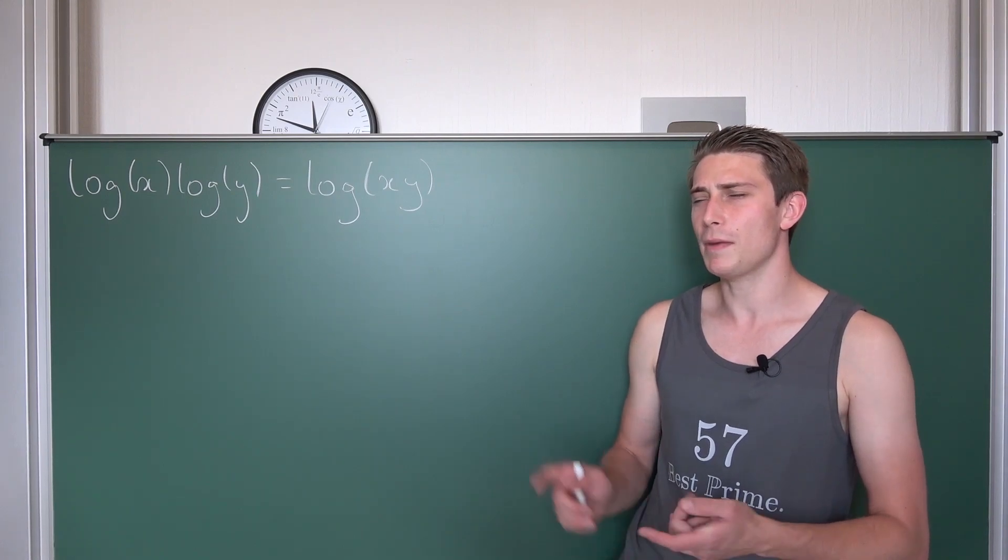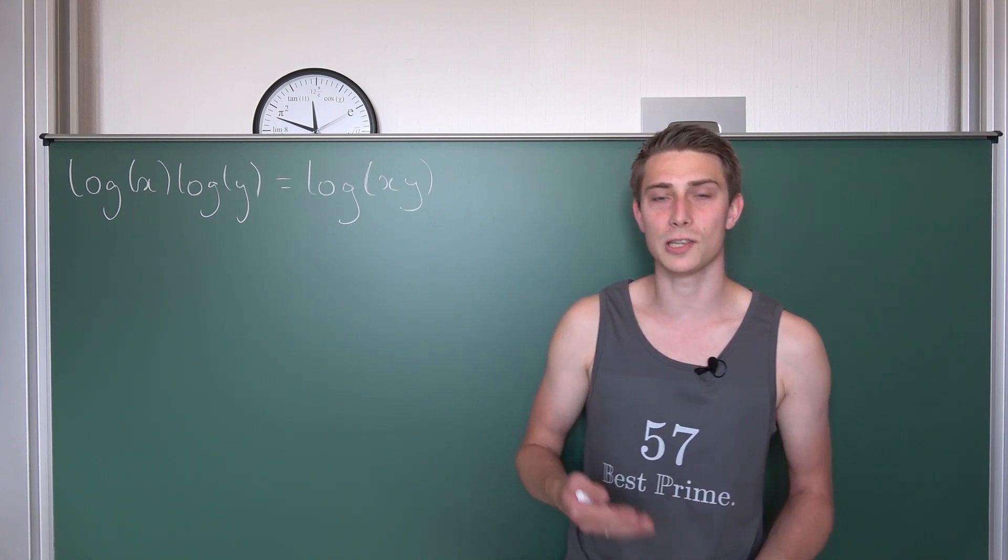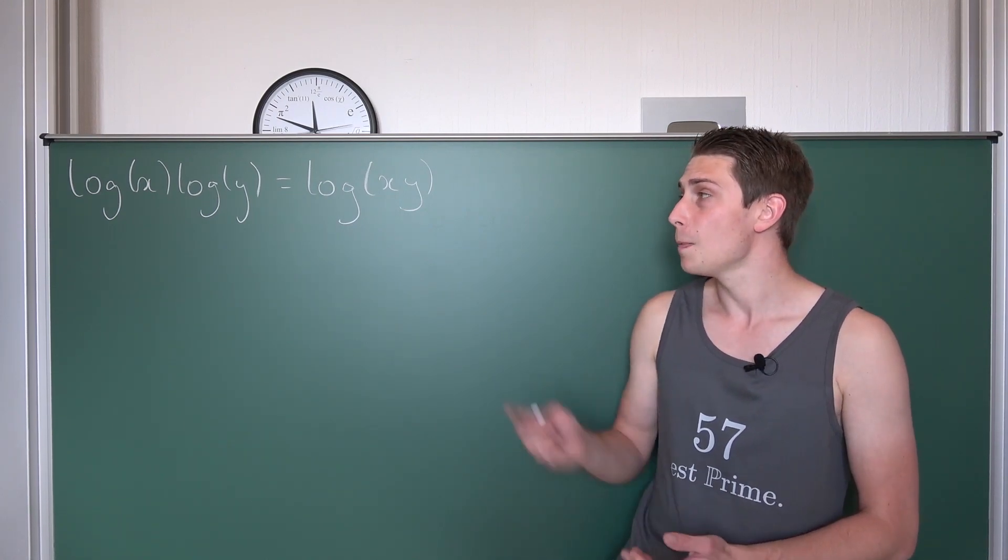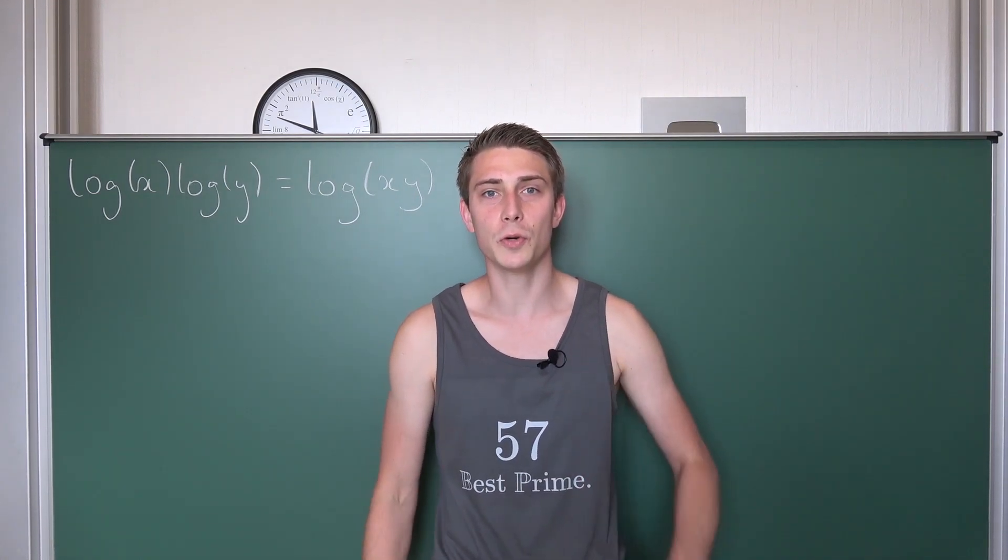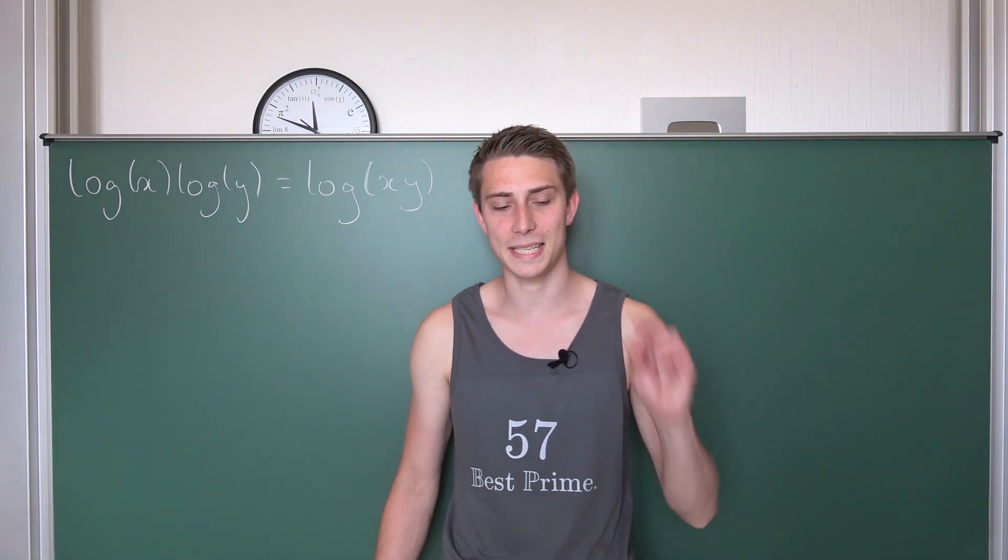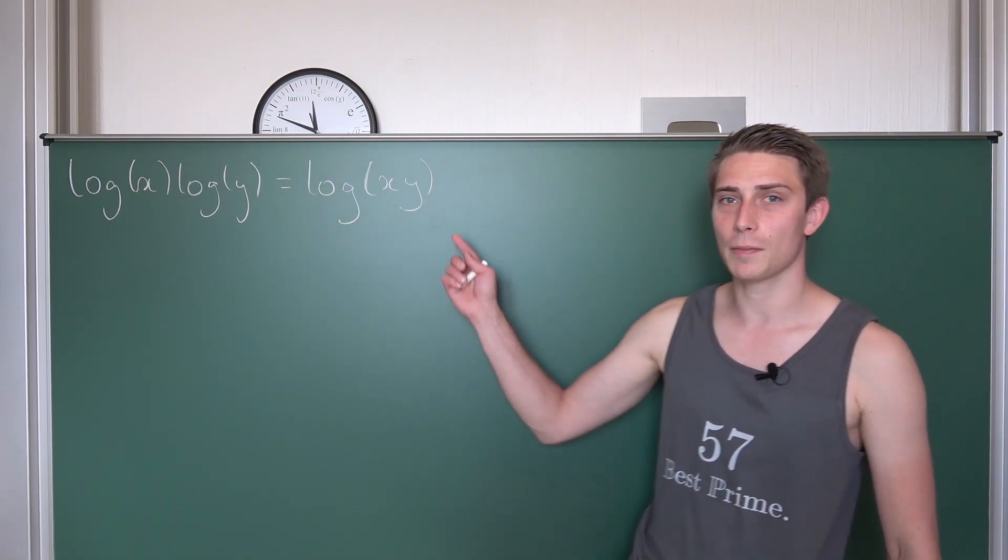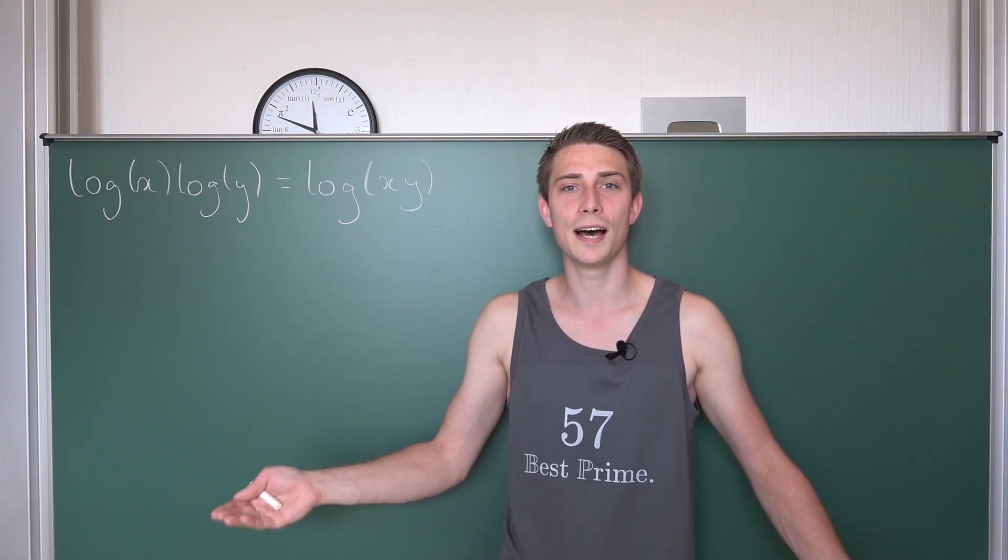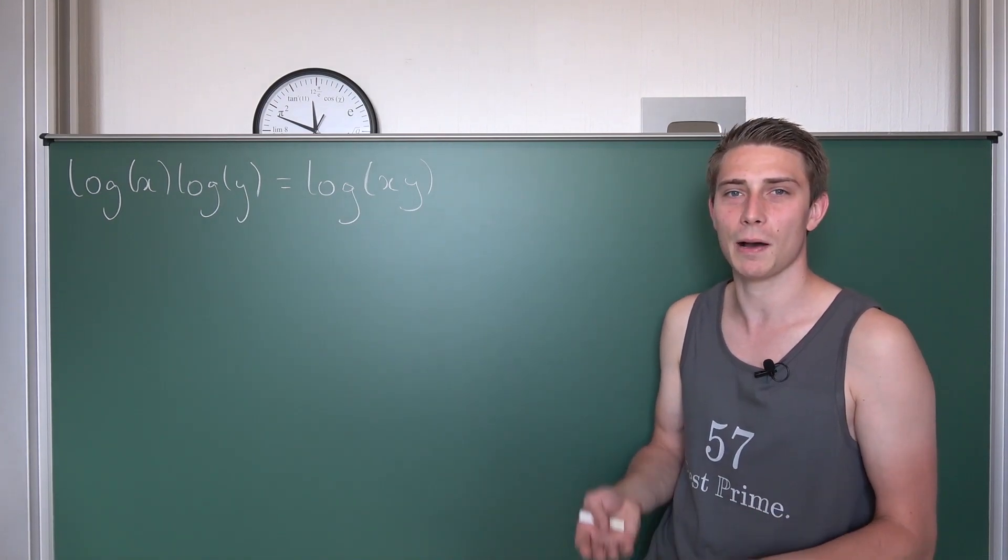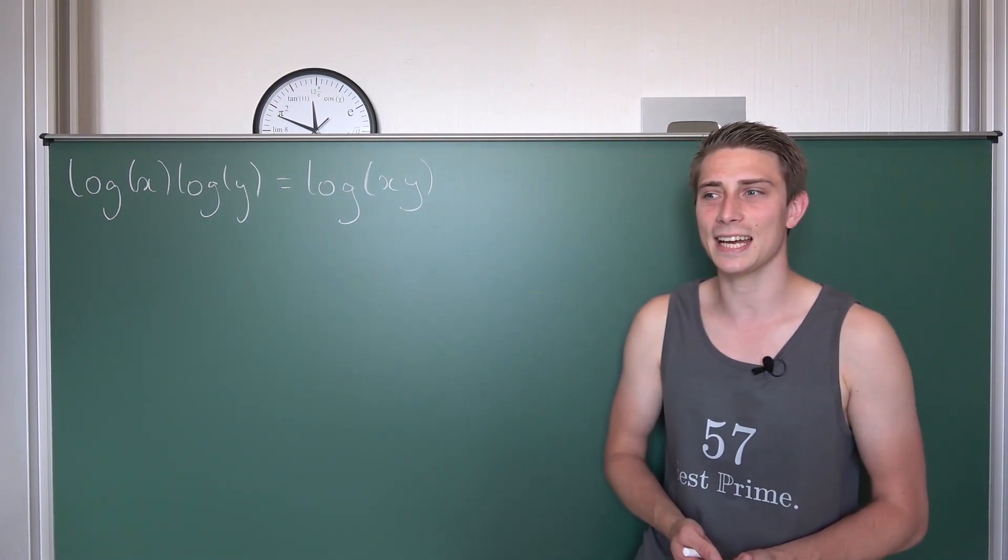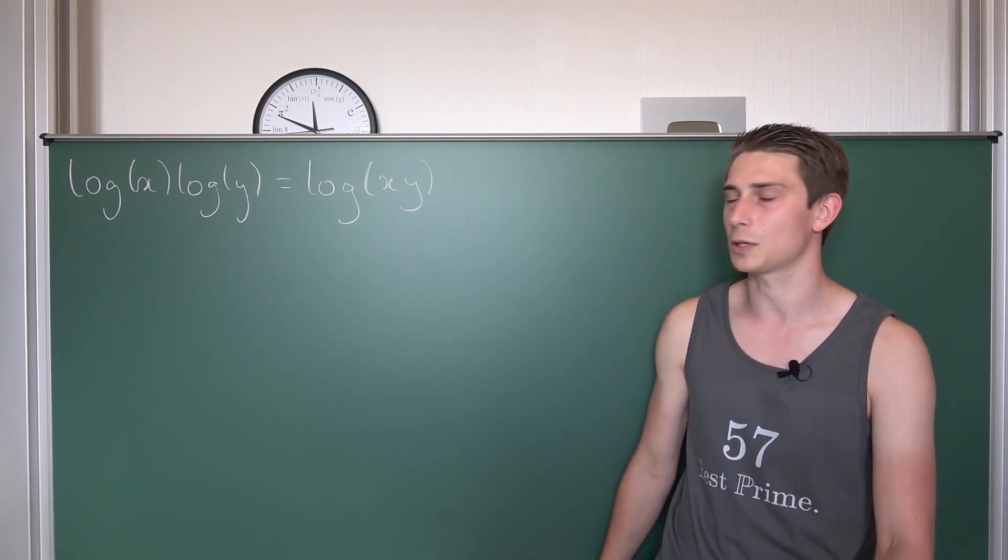We are going to do mathematics gone wrong done right yet again today and we are going to take a look at the last false logarithm rule I could come up with. Logarithm of x times logarithm of y being equal to the logarithm of x times y. If you're wondering why I'm saying y, it's a little Ozarks reference. Best Netflix series, per se. Trust me, it's pretty freaking good. At first I couldn't come up with a solution to this thing just because I did it way too complicated. But it's actually really easy and the graph looks kind of spicy yet again. So we are going to take a look at the graph at the end.